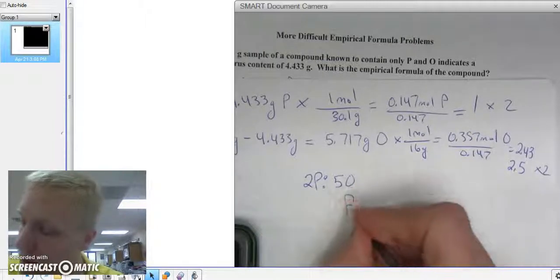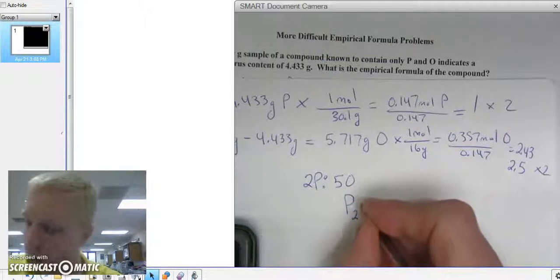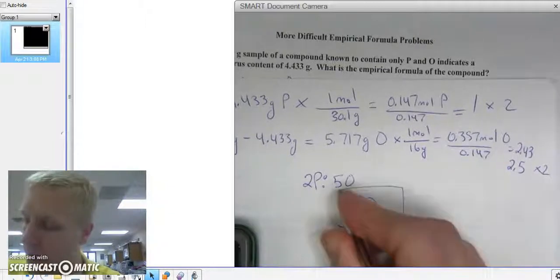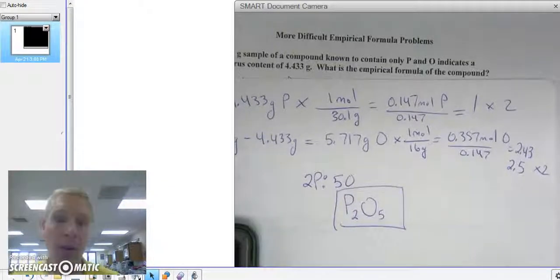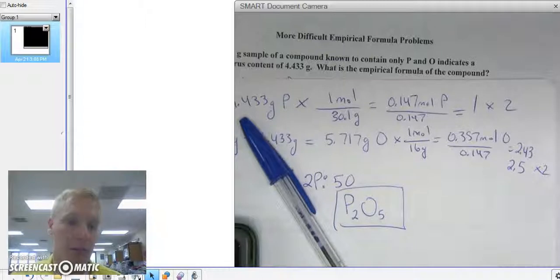So really, my empirical formula is going to be P2O5. And that is how you do a more difficult empirical formula problem.